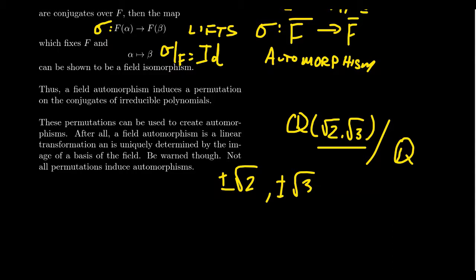What you often can do when computing a Galois group is list all the possible permutations and then argue that the order of the Galois group is such-and-such. If you listed all the possibilities and it's the same number, you're done. It's a very nice technique. Let me demonstrate that in the next example.